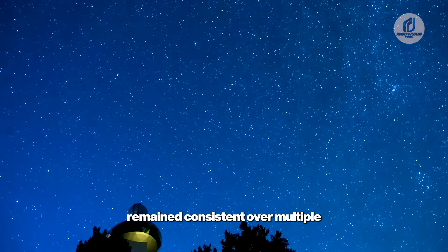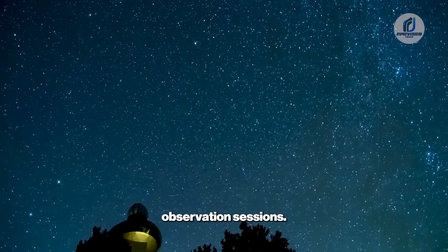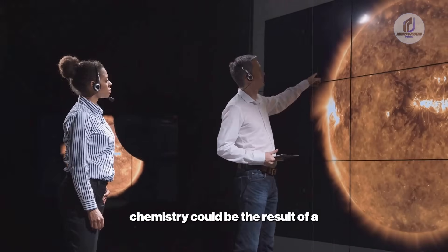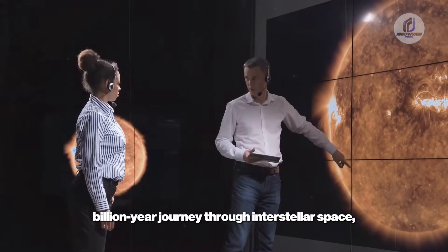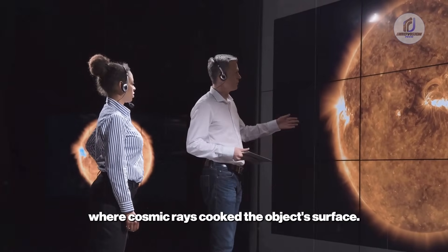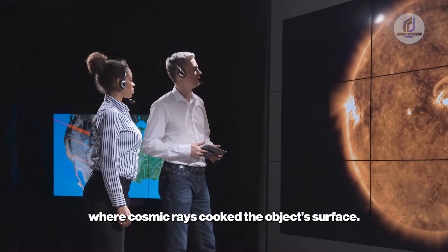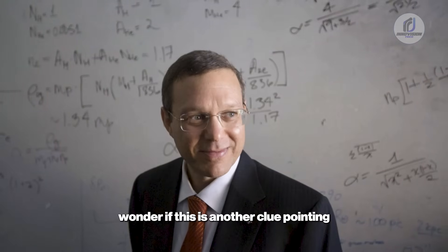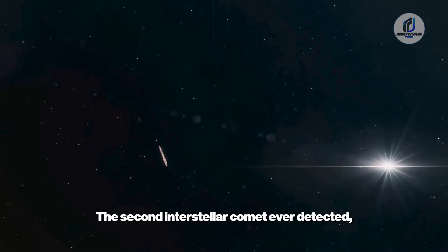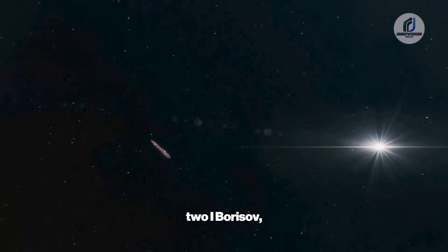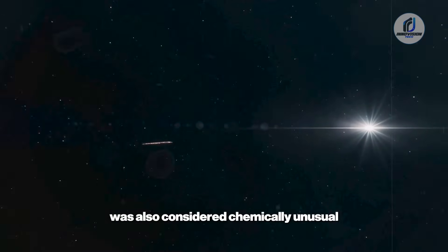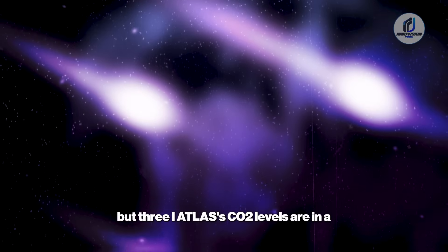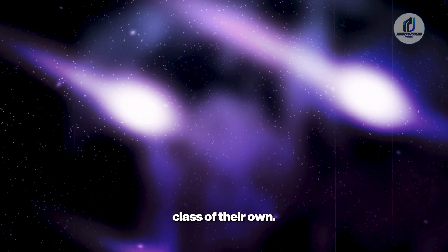This wasn't a fluke, the readings remained consistent over multiple observation sessions. Some scientists proposed that this strange chemistry could be the result of a billion-year journey through interstellar space, where cosmic rays cooked the object's surface. But others, including Avi Loeb, wonder if this is another clue pointing toward an unnatural origin. The second interstellar comet ever detected, 2I Borisov, was also considered chemically unusual for its high concentration of carbon monoxide, but 3I Atlas's CO2 levels are in a class of their own.